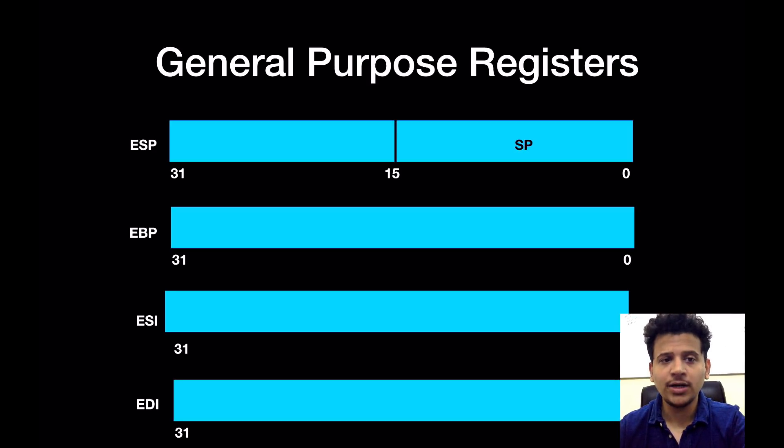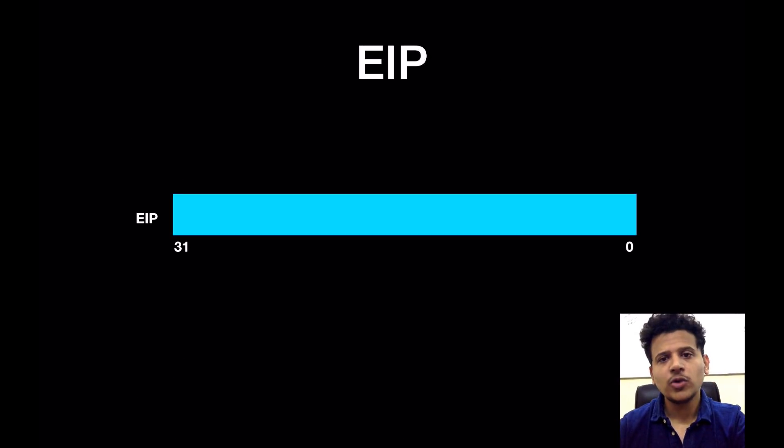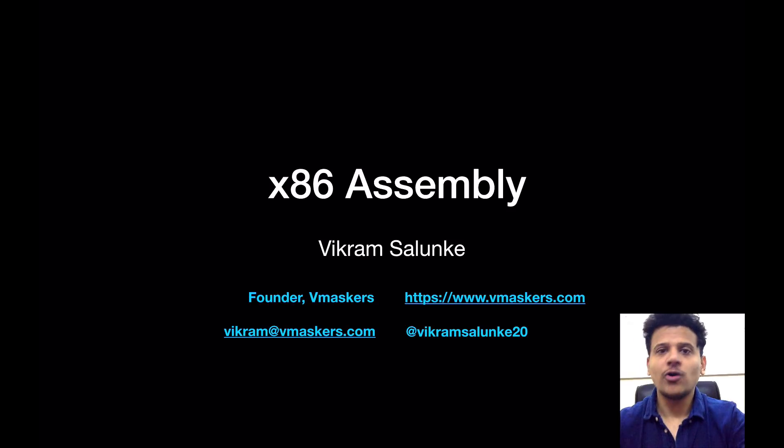So ESP, EBP, ESI, and EDI - those are also 32-bit. We can access the lower word of ESP using SP, we can access the lower word of EBP using BP, we can access the lower word of ESI using SI, as well as we can access the lower word of EDI using DI. EIP is also 32-bit, and we can access its lower word using IP.